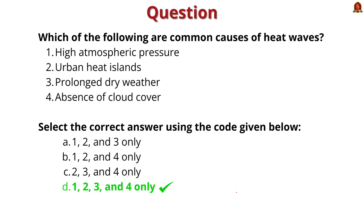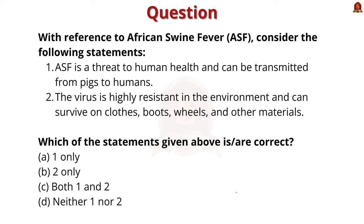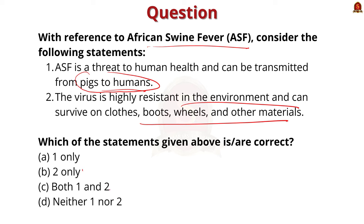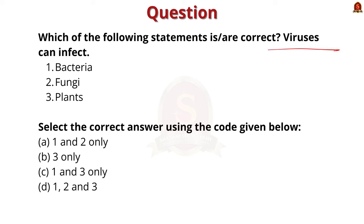Question 2 — with reference to African swine fever, consider: Statement 1: African swine fever is a threat to human health and can be transmitted from pigs to humans. Statement 2: The virus is highly resistant in the environment and can survive on cloth, boots, wheels, and other materials. The correct answer is option B — statement 2 only. Statement 1 is wrong because the virus cannot easily be transmitted from pigs to humans. Statement 2 is correct — it can resist in the environment and survive on various materials. Question 3 — viruses can infect bacteria, fungi, and plants. The correct answer is option D — all three are correct, as viruses can indeed infect bacteria, fungi, and plants.